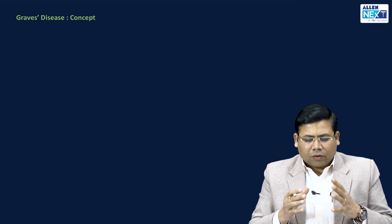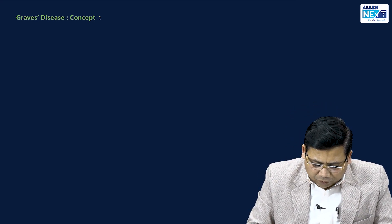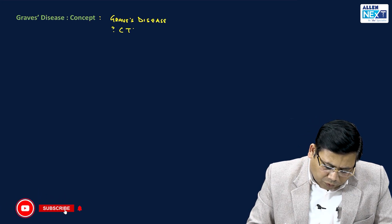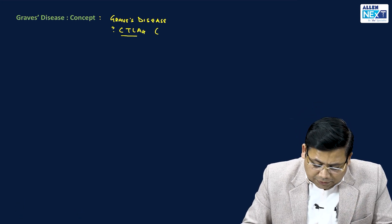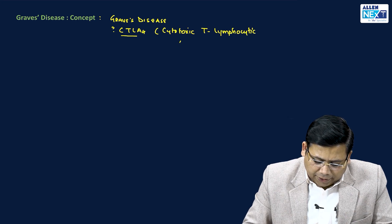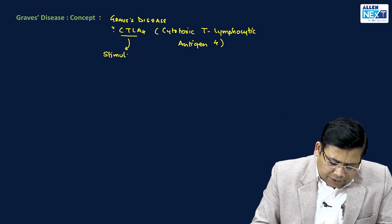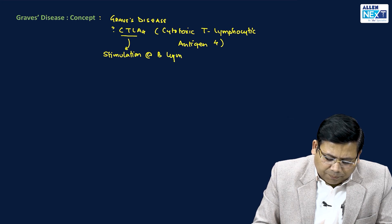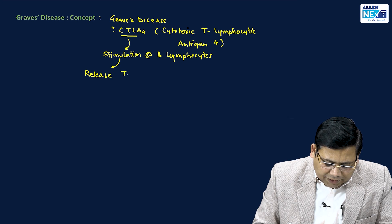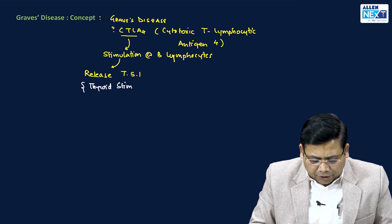Graves disease is associated with a very important concept: CTLA-4, which stands for Cytotoxic T-lymphocyte antigen-4. This is the most important culprit. CTLA-4 stimulates B-lymphocytes, and when B-lymphocytes are stimulated, they release TSI — thyroid stimulatory immunoglobulin.